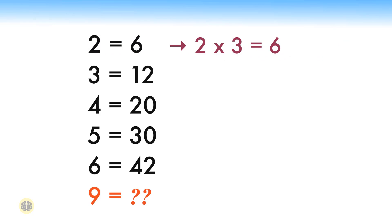For example, in the first set, the integer before the equal sign is 2, which is multiplied by its consecutive next integer 3, and the result is 6 on the other side of the equal sign. Similarly, in the second set, the integer before the equal sign is 3, which is multiplied by its consecutive next integer 4, and the result is 12 on the other side of the equal sign.